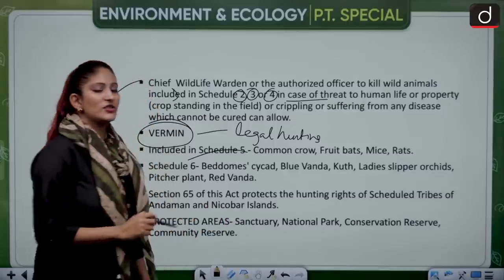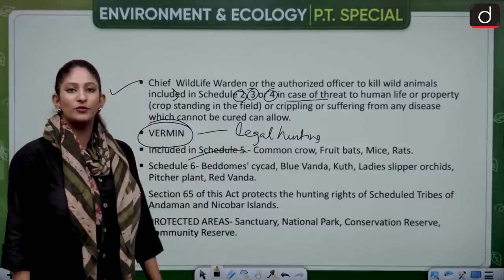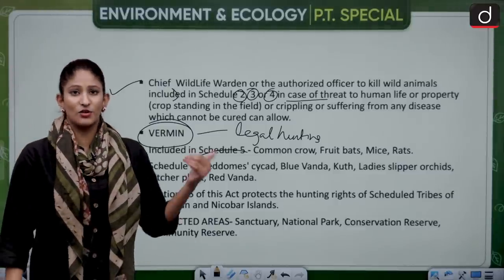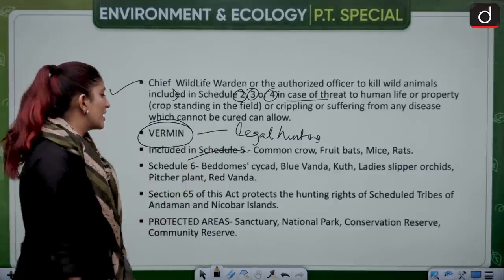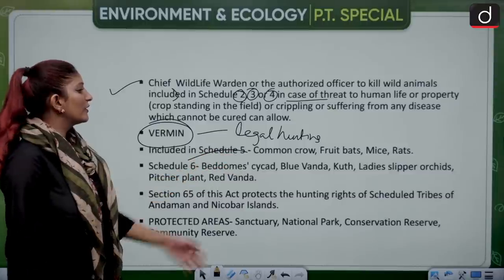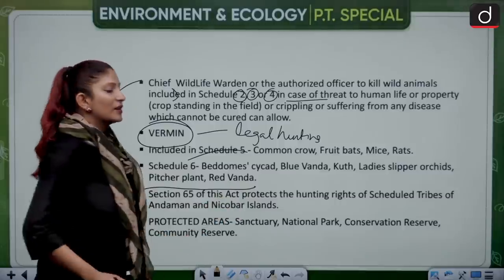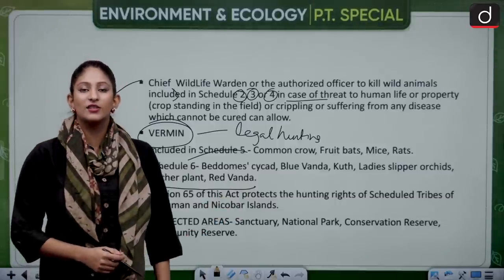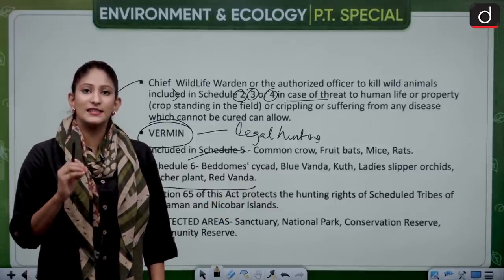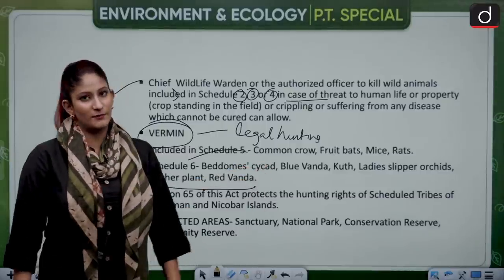Under Schedule 5, we have certain animals such as the common crow, fruit bats, mice and rat. Schedule 6 covers plants such as Beddome's cycad, blue vanda, kuth, lady slipper orchids, pitcher plants and red vanda. These plants are mentioned under Schedule 6 because a license is needed under the Wildlife Protection Act to cultivate them.